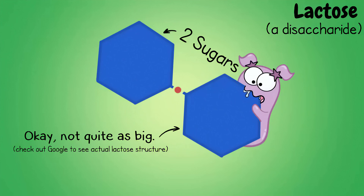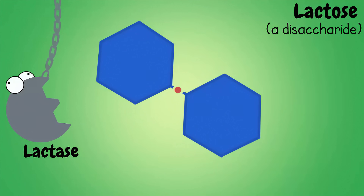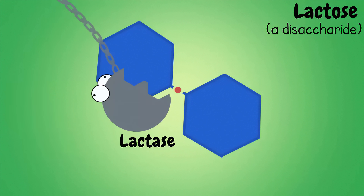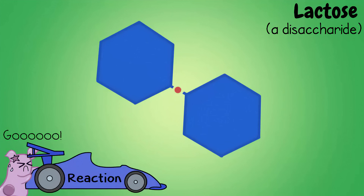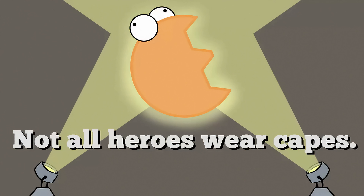We don't actually digest lactose so well in that form — it's big. The enzyme lactase has the ability to break lactose down into smaller parts that our body can digest. This is a lot better than waiting for a chemical reaction with lactose to happen spontaneously. With the lactase enzyme, lactose can be broken down quickly and digested.